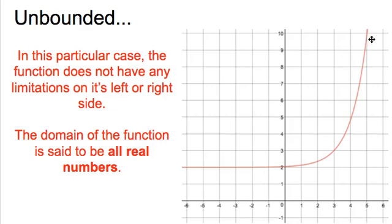Now we can look at the situation where it doesn't stop on either side. So we look to the left, continues on forever. We look to the right, and it continues on forever. When this happens, we say that the domain of the function is all real numbers.